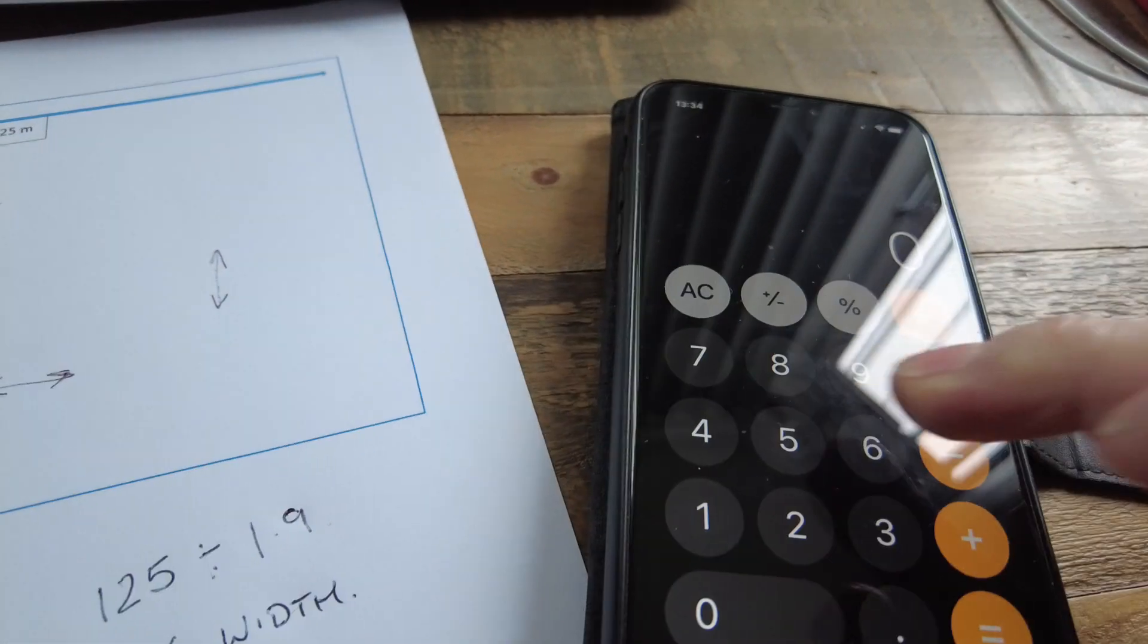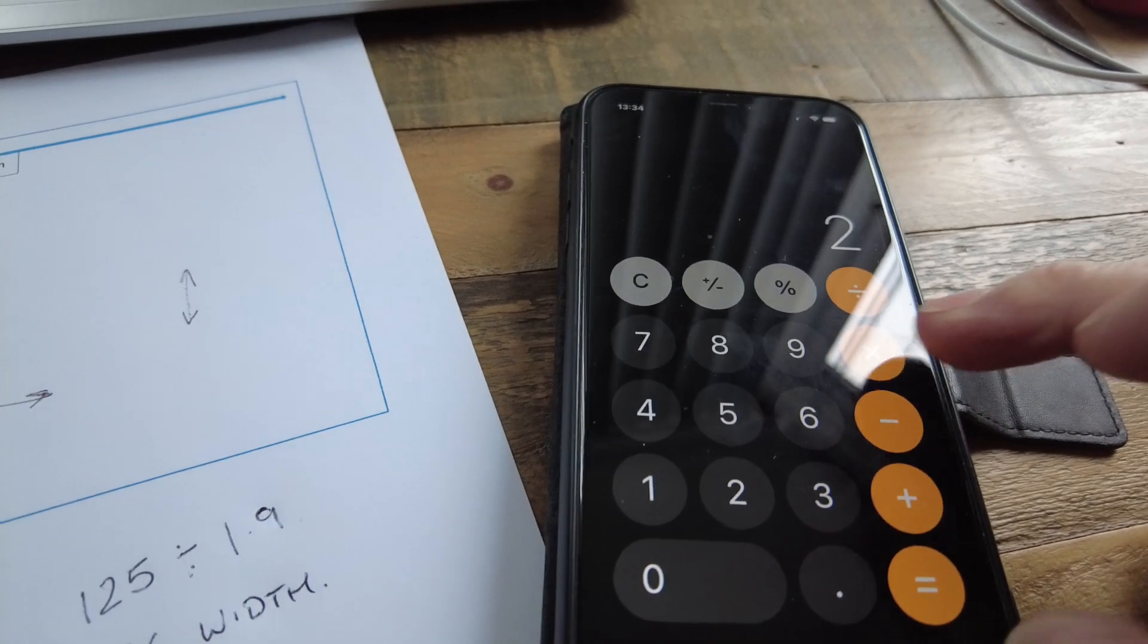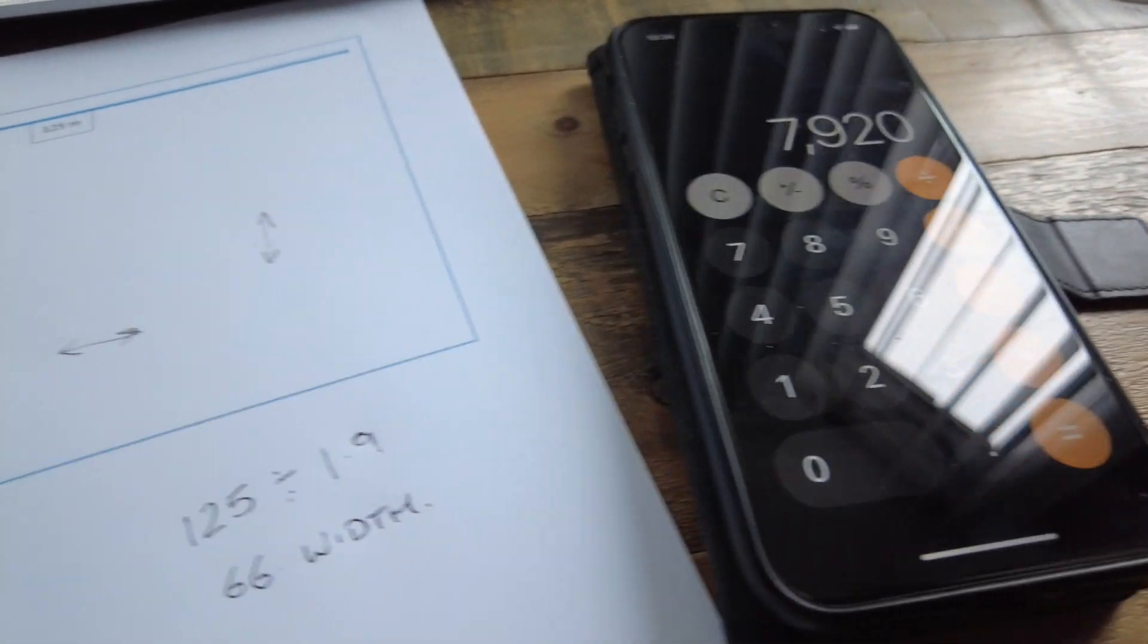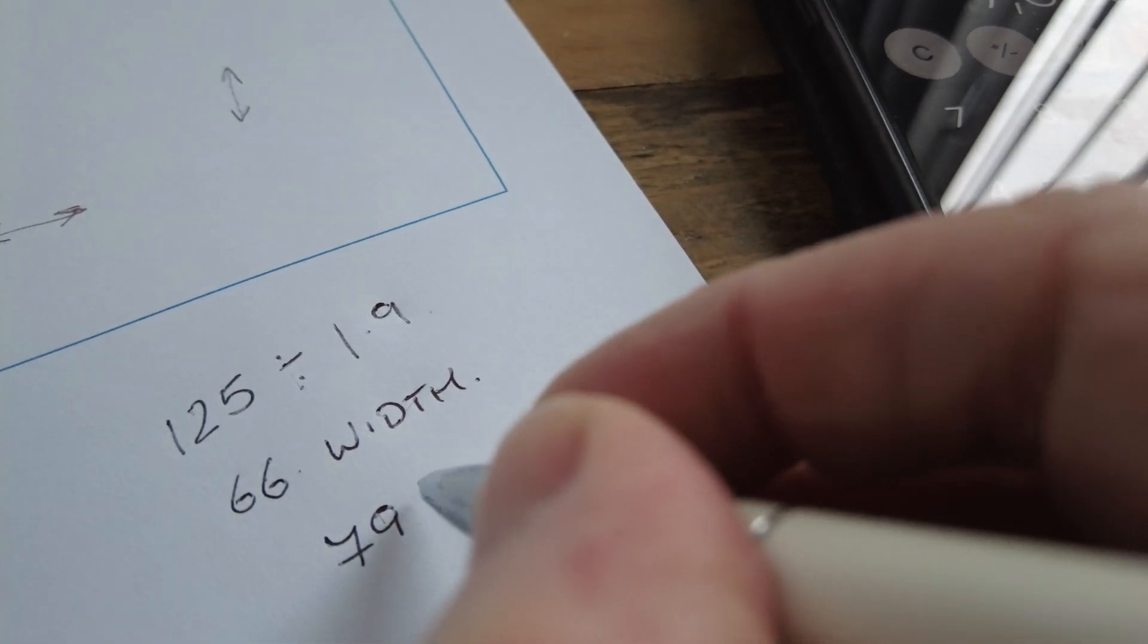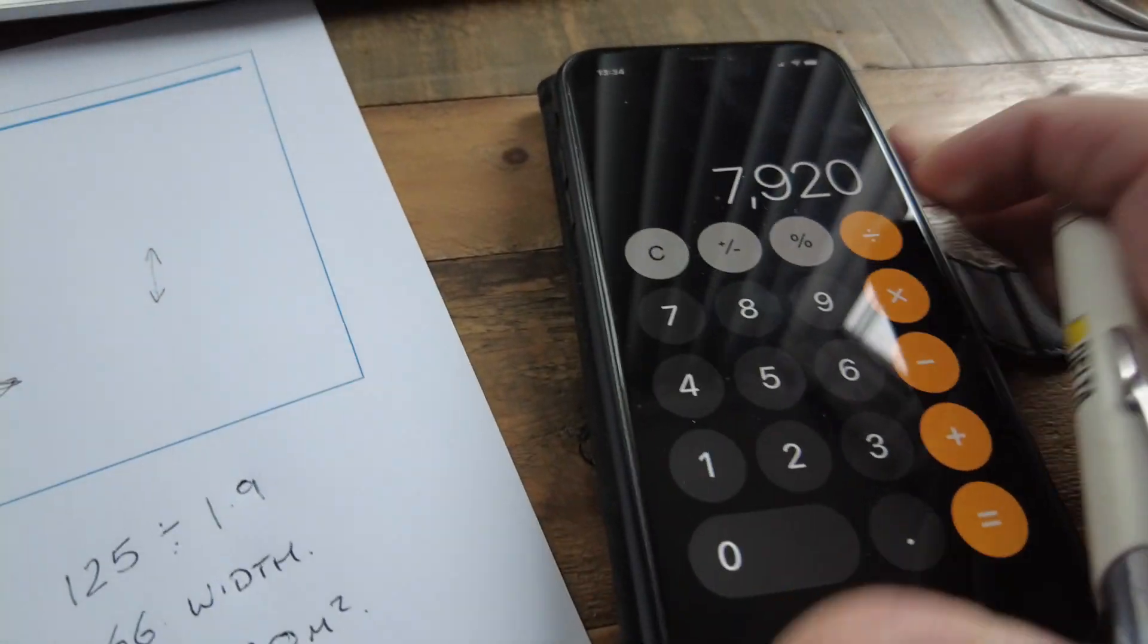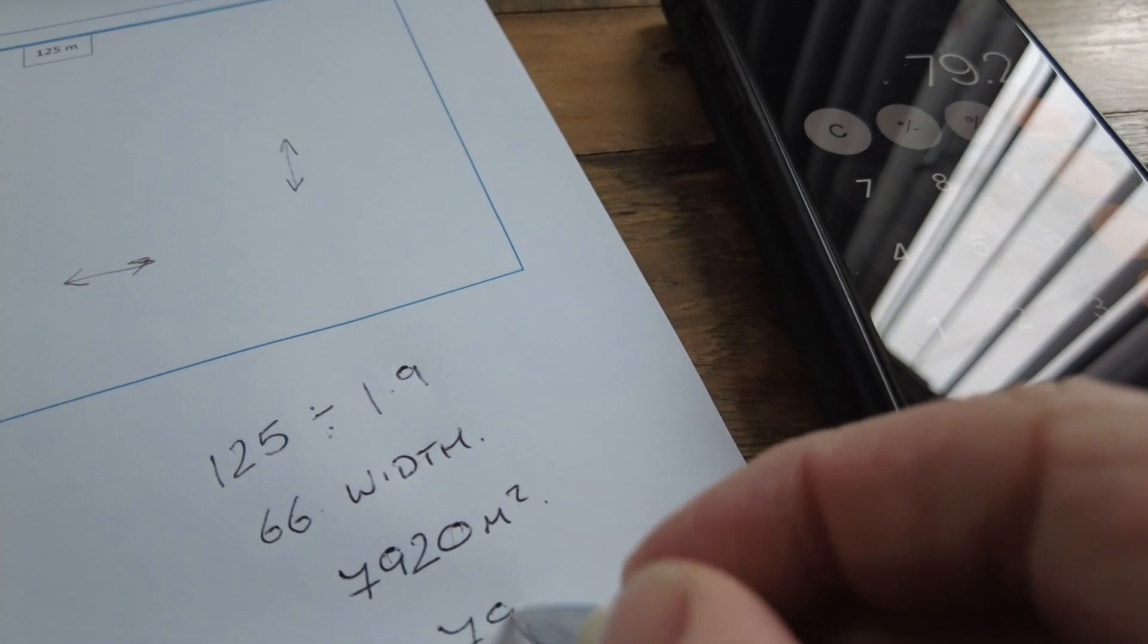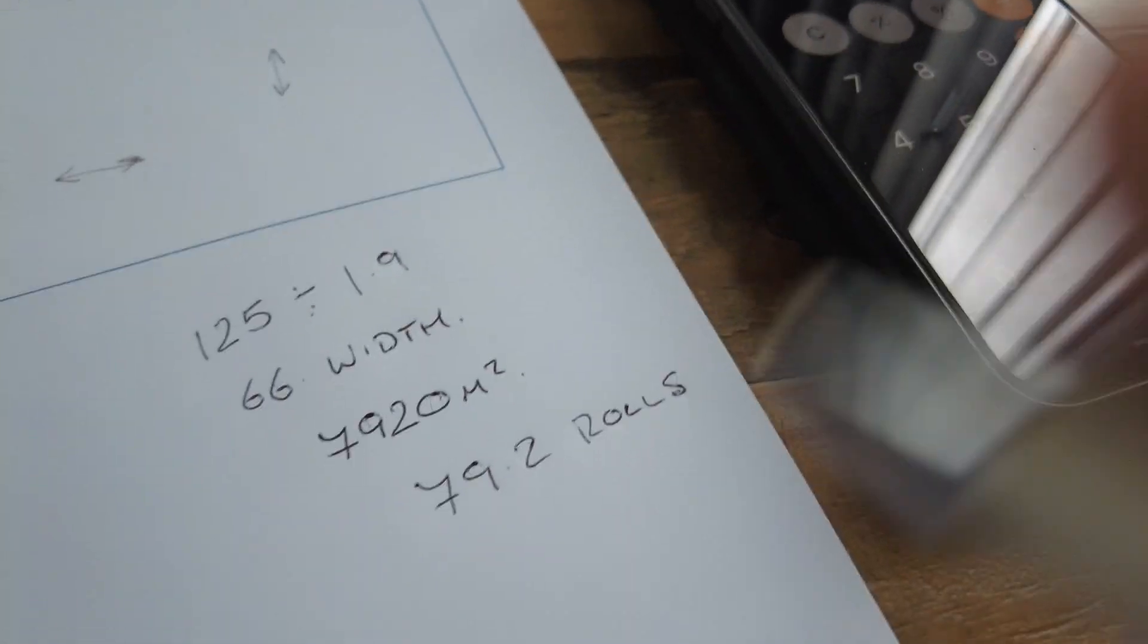So we know we're going to use 66 pieces. So we're going to use 66 pieces of membrane, which we know are 2 meters wide, times 2, times the length of the sheet, because we know it's 60 meters. So 60 meters. So there we've got a gross area. And I use that word, so that gives us 7,920 meters squared of material. And we all know that a roll of material, 2 by 50 is 100. So divide that by 100 equals 79.2 rolls.